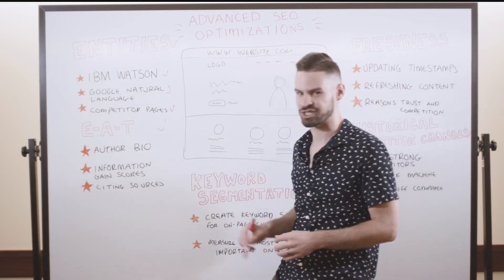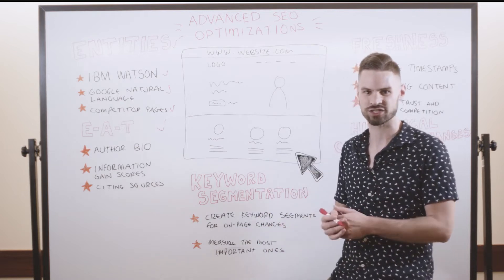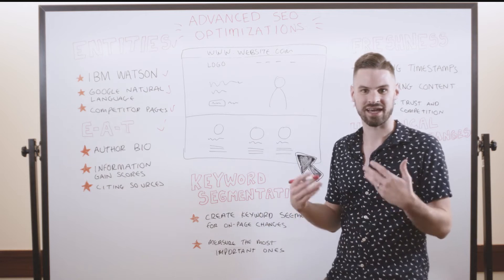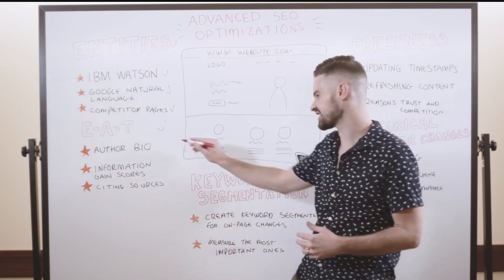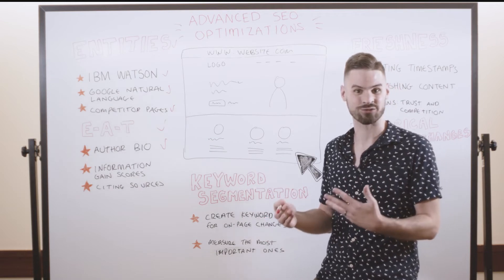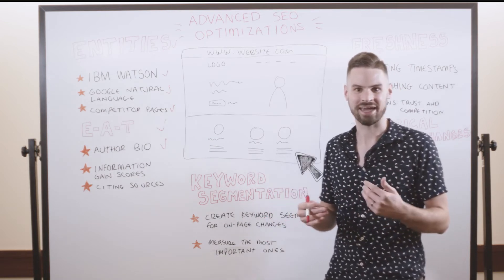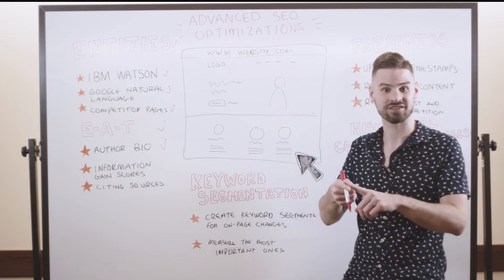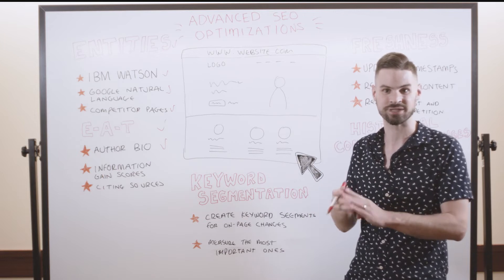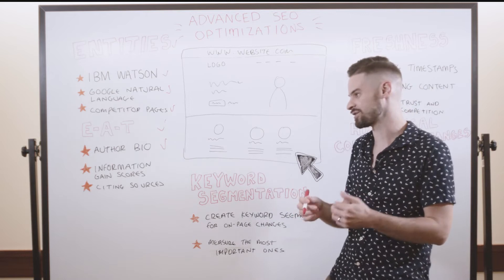Another great way to take your on-page optimizations to the next level is this concept of EAT, expertise, authoritativeness, and trustworthiness. One of the best ways to improve the expertise of your site content is just to simply look at your author biographies. A lot of sites still get this wrong. And when you look at author biographies, you should always be thinking about where can I highlight my years of experience, my education, my previous experience, my thought leadership directly within your author biographies, to better highlight your expertise to both Google and users.